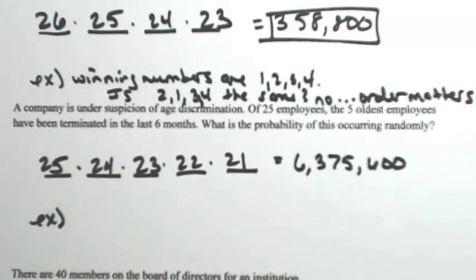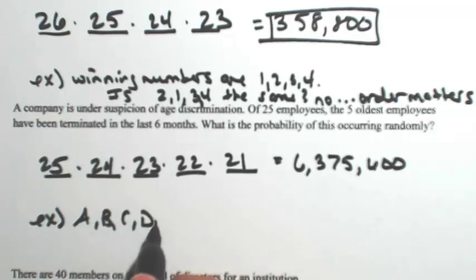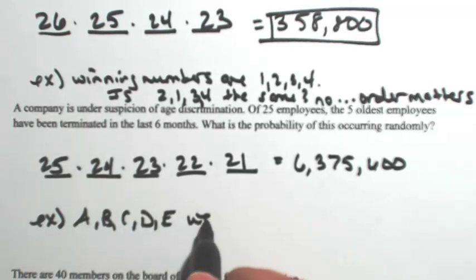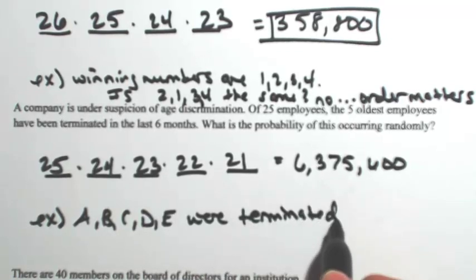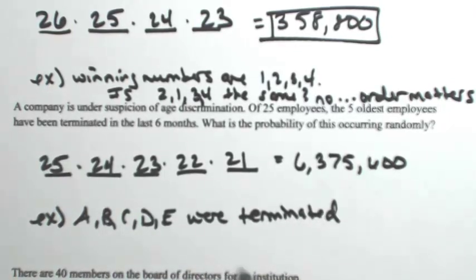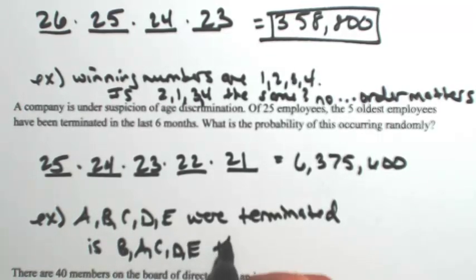And this gives us 6,375,600 ways for this to happen. Now here's your big question you need to ask: does the order matter? So let's say A, B, C, D, and E were terminated. Let's say that's who the five people were. Is, let me just switch two of them, is B, A, C, D, E the same?